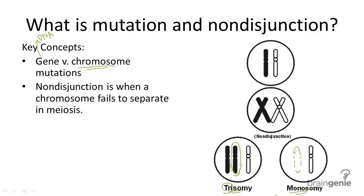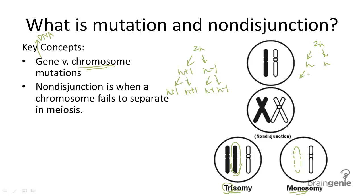There are two different ways you can end up with non-disjunction. Either the homologous chromosomes fail to separate during meiosis one — and then the mutation passes on to the sister chromatids because they're exactly identical — or the homologous chromosomes separate correctly but the sister chromatids do not separate correctly. Both result in a chromosome mutation.